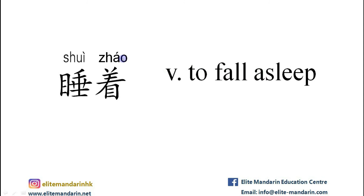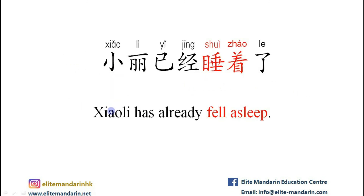睡着 — it means to fall asleep. The example: 小力已经睡着了。 小力 (the name), 已经 (already), 睡着 (fall asleep), 了. 小力 has already fallen asleep.